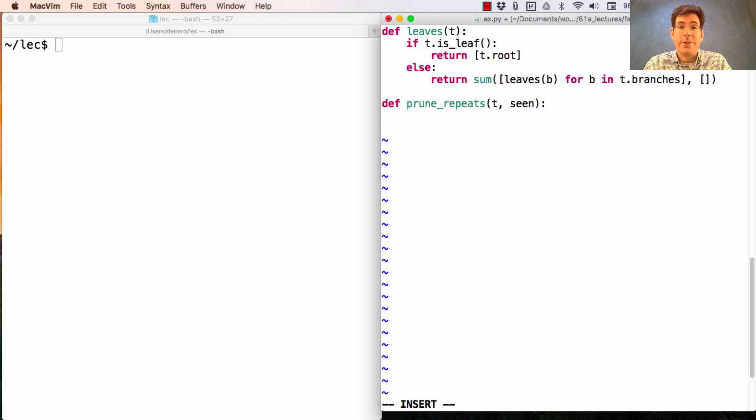Now tree mutation just means reassigning one of the attributes, either the branches or the root. So in this case, I'm going to say that the branches of the pruned tree are all branches of the original tree, but we only include the branches that we haven't seen before.